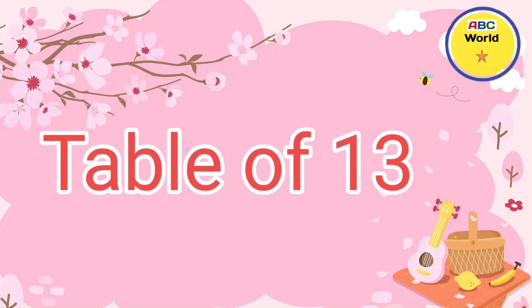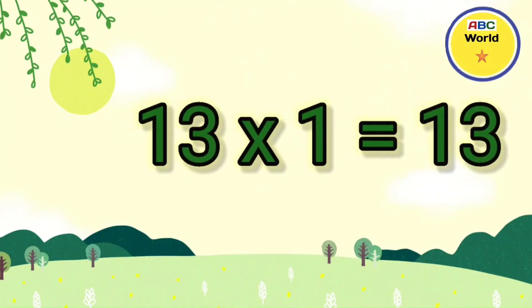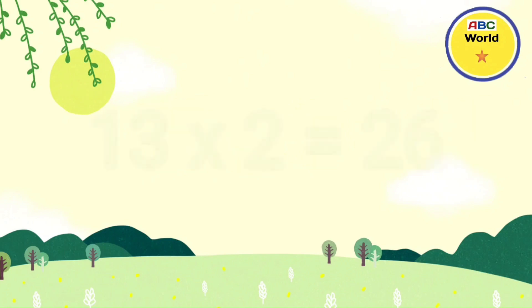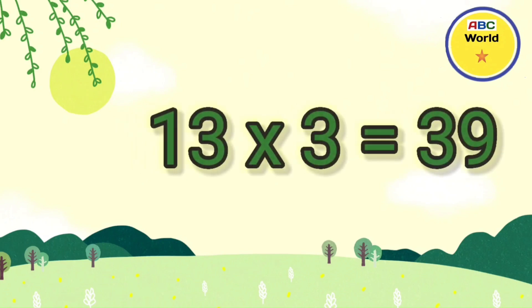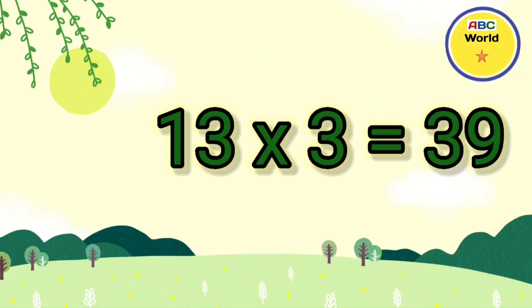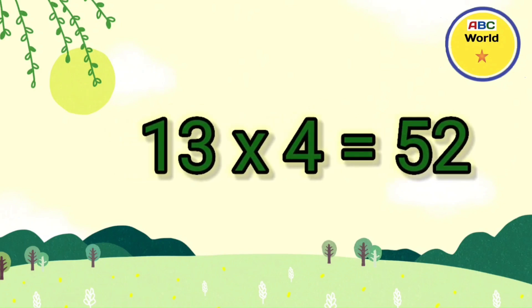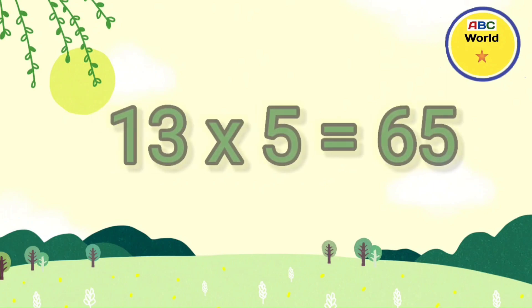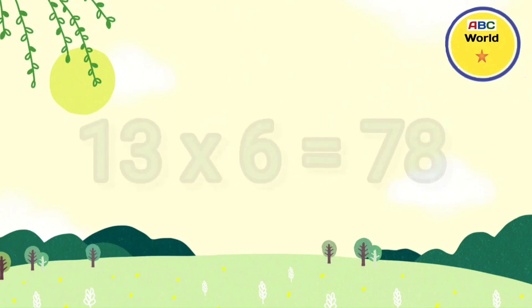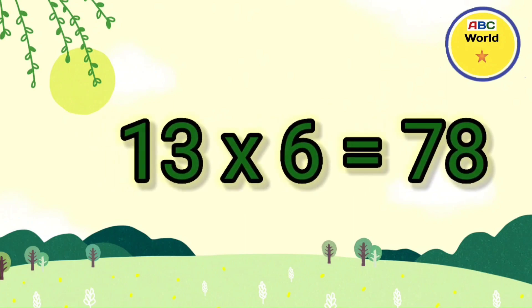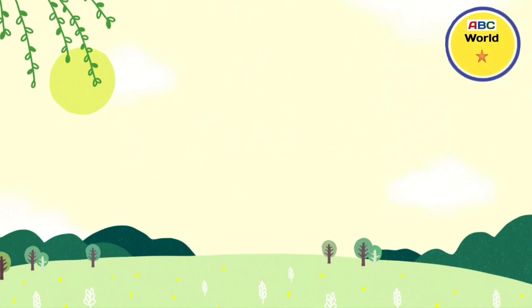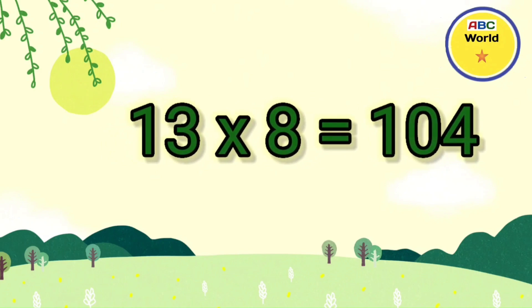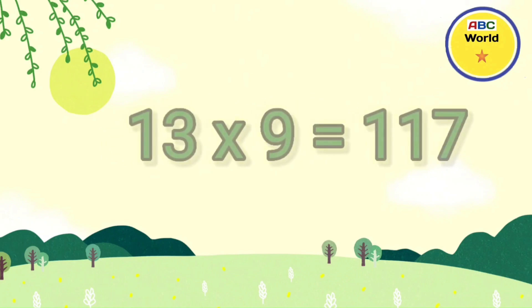Table of 13. 13 ones are 13. 13 twos are 26. 13 threes are 39. 13 fours are 52. 13 fives are 65. 13 sixes are 78. 13 sevens are 91. 13 eights are 104. 13 nines are 117.